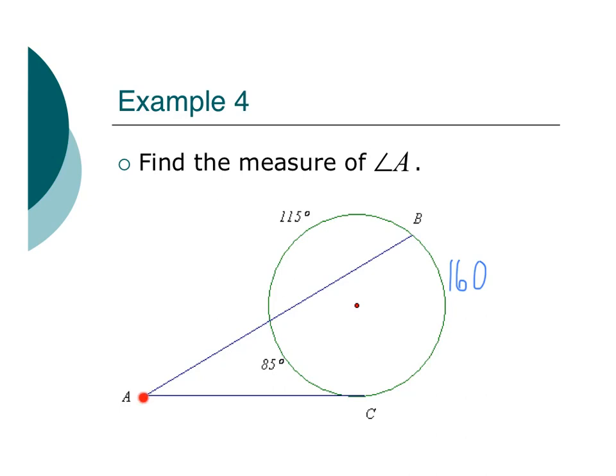All right. Well, this is an out angle. The out angle is equal to the difference of these two divided by 2. So I have 160 minus 85 over 2. And that's going to give me my answer, which is 37.5 degrees. There's my angle A. Yes. Yes.